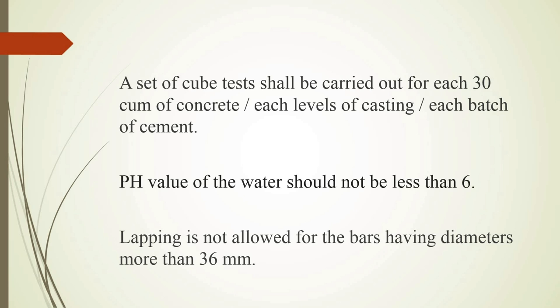The pH value of water used in construction should not be less than 6, because the pH value is important for the water quality. Some salt water may be present, so it must be identified and removed from the water.